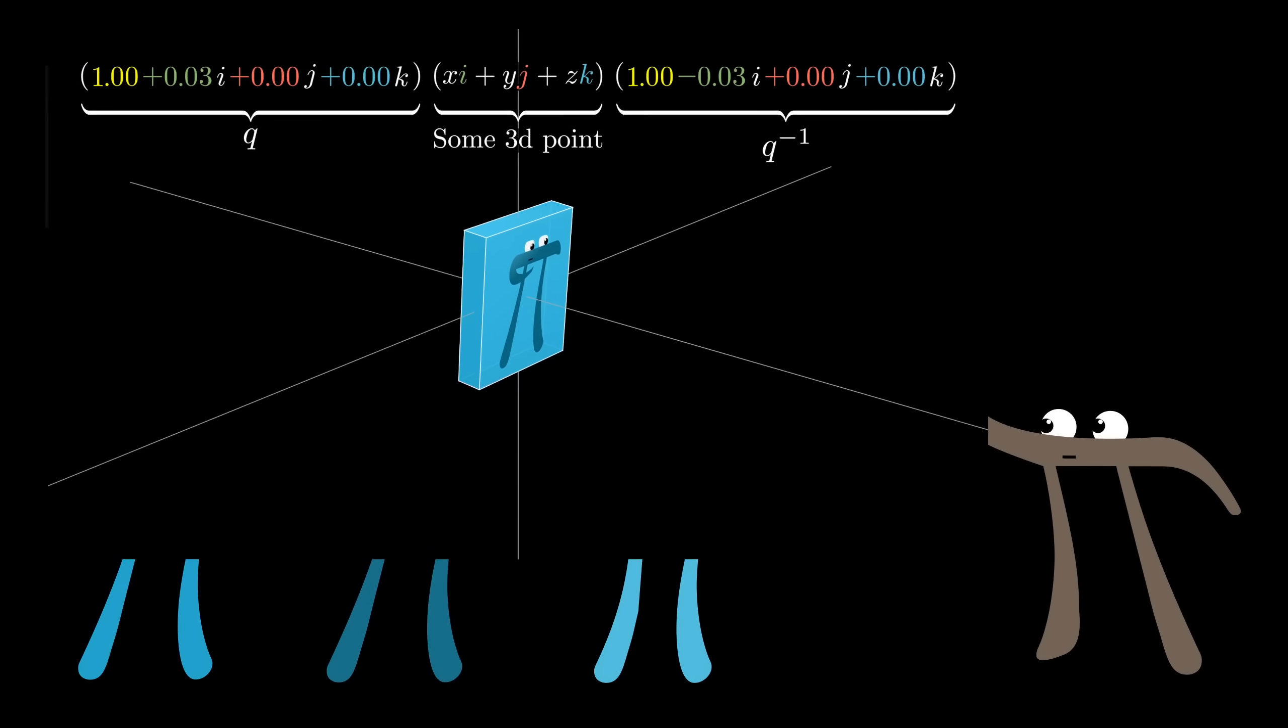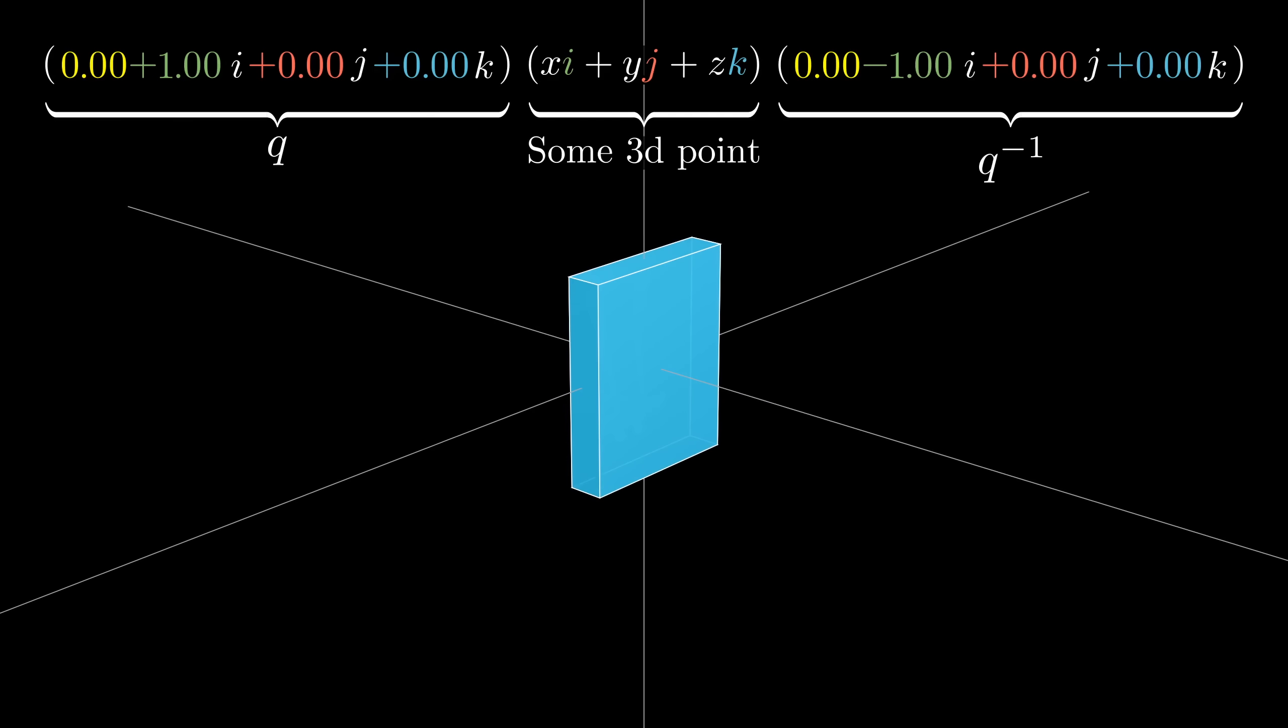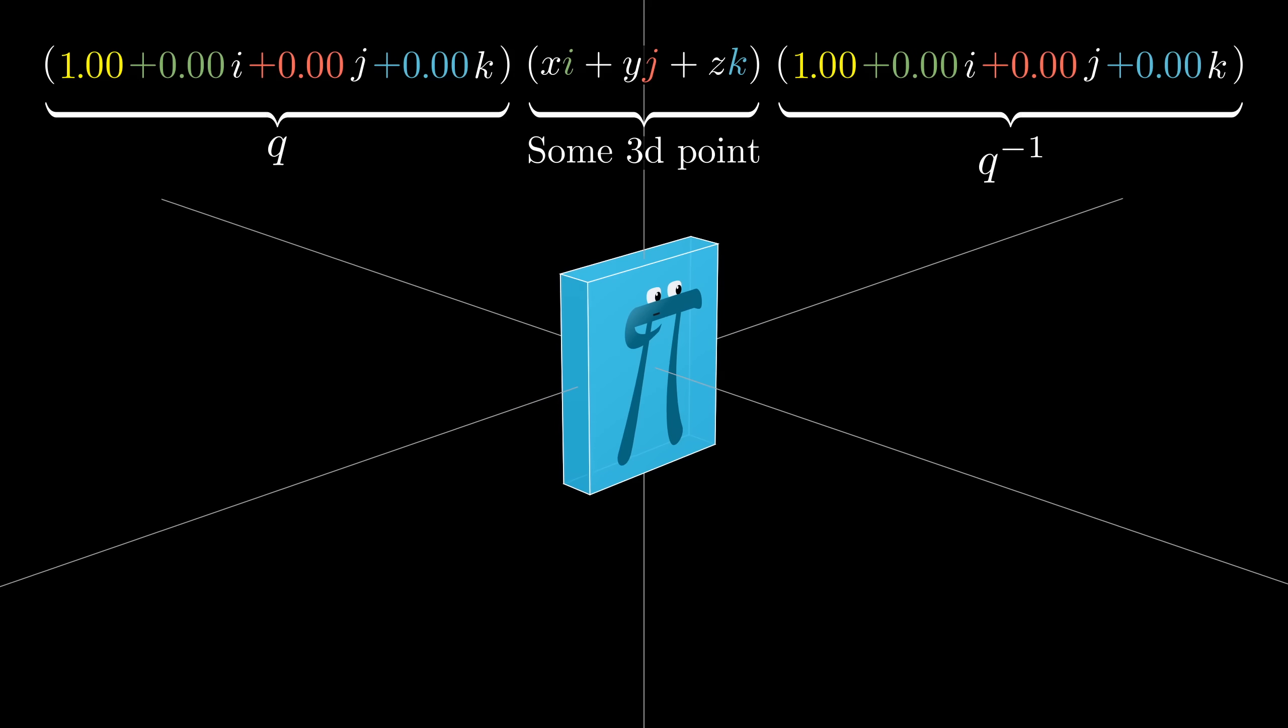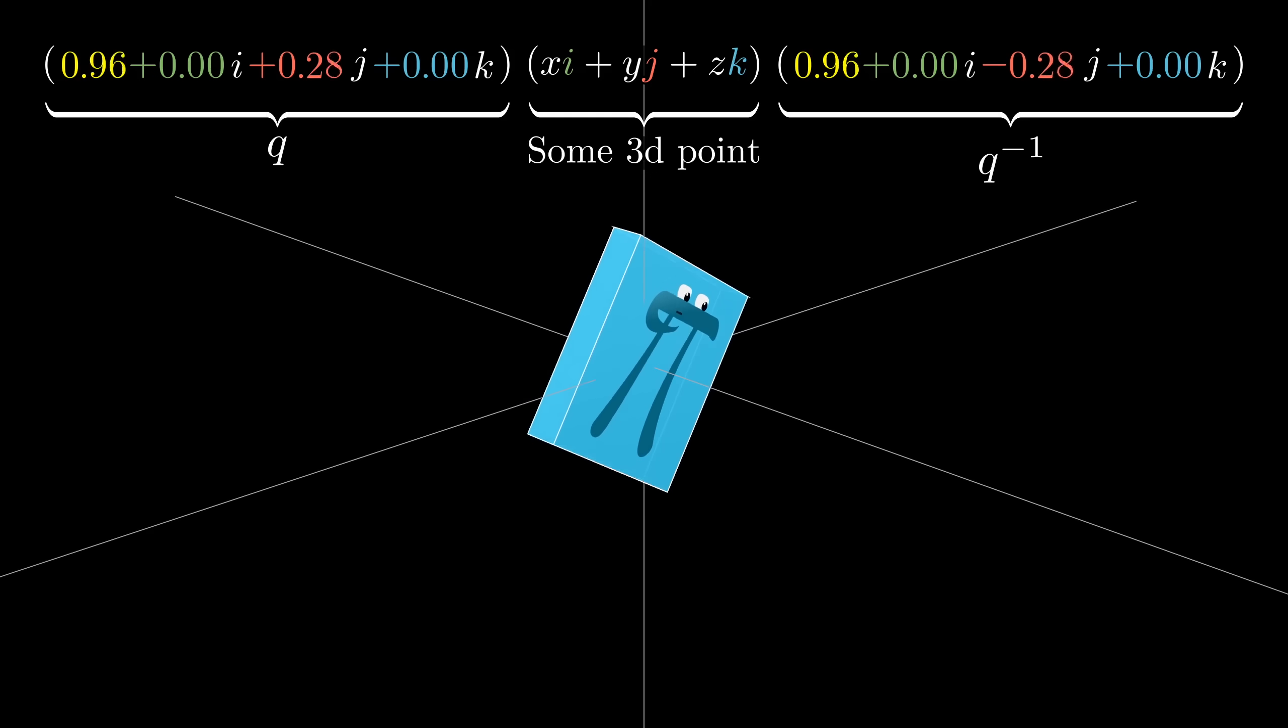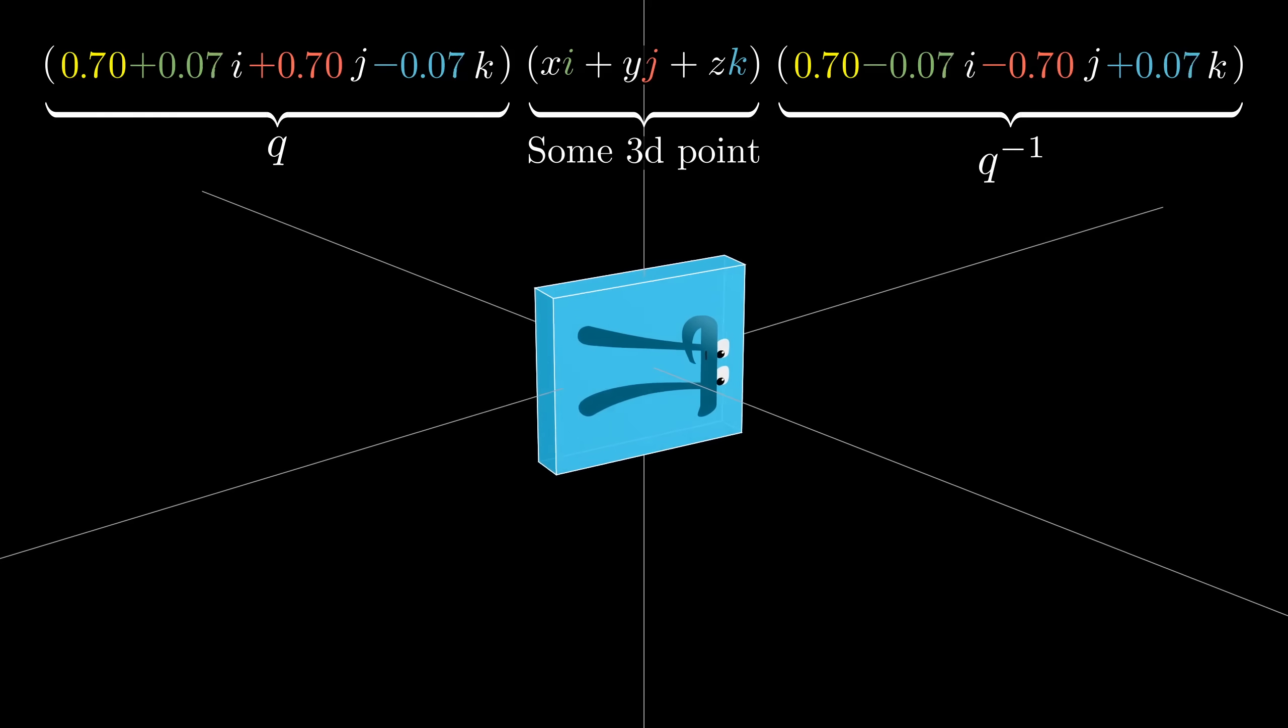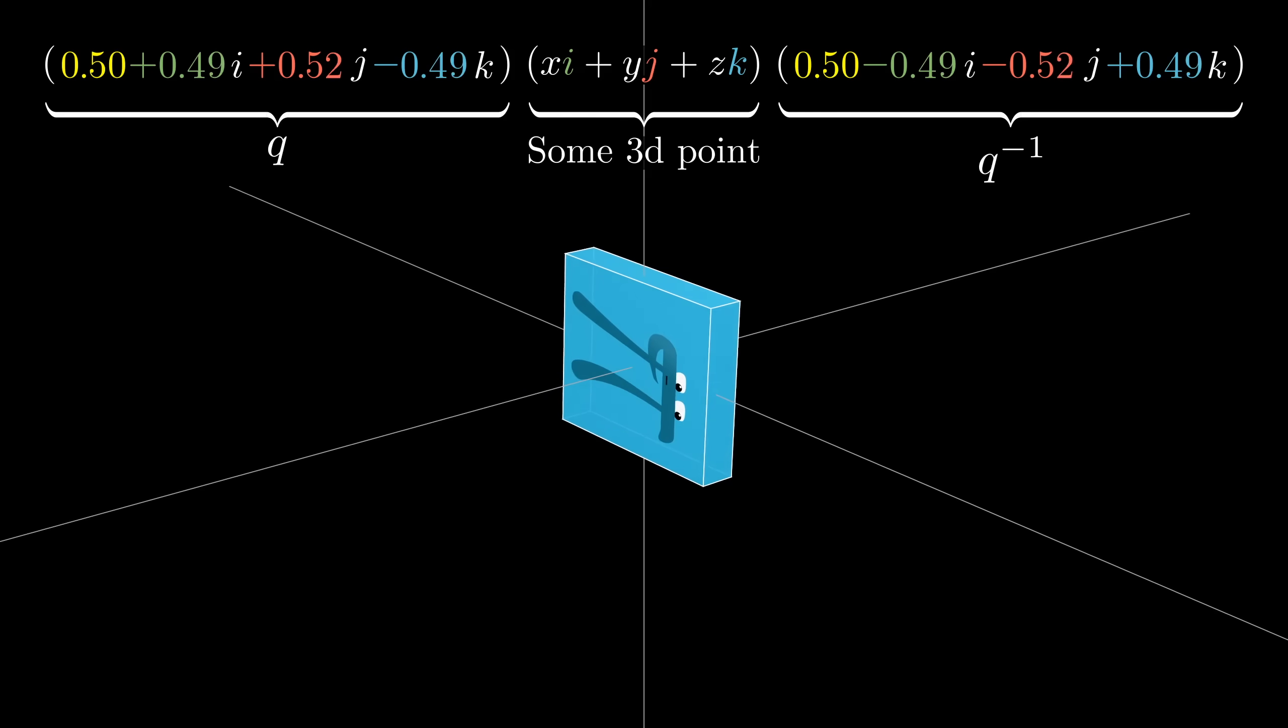One of the big reasons, especially for programmers, is that they give a really nice way for describing 3D orientation which is not susceptible to the bugs and edge cases of other methods. I mean, they're interesting mathematically for a lot of reasons, but this application for computer graphics and robotics and virtual reality and anything involving 3D orientation is probably the biggest use case for quaternions.